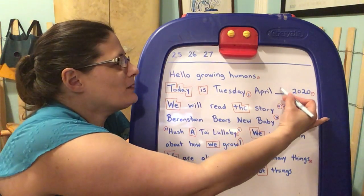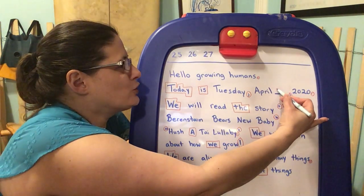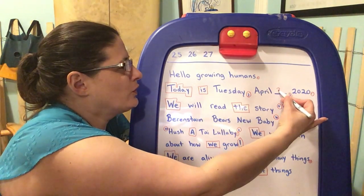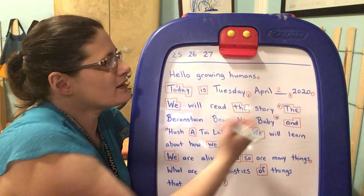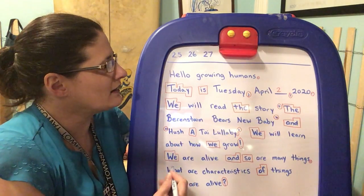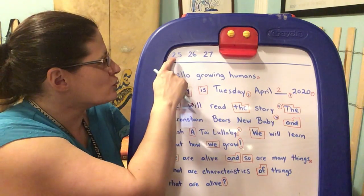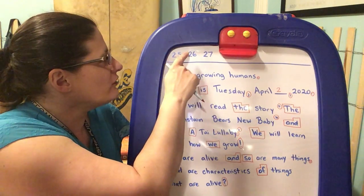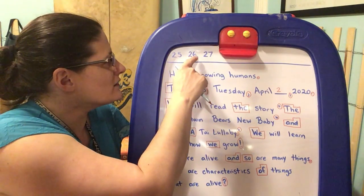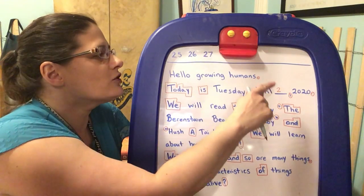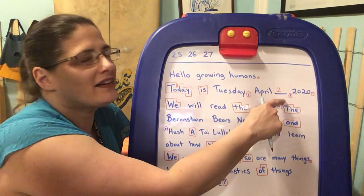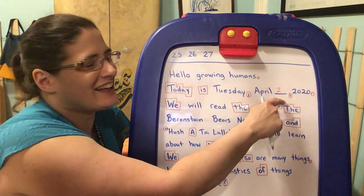And 20 numbers start with a two. What comes next in 28? We have two and a five, two and a six, two and a seven, two and an eight.